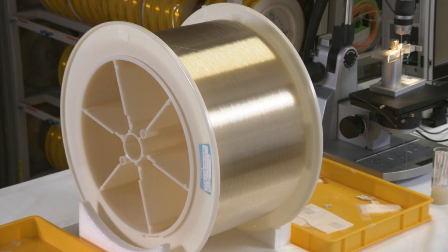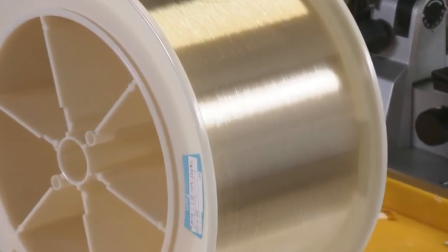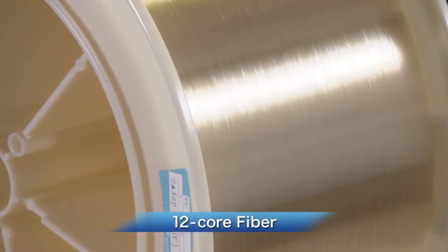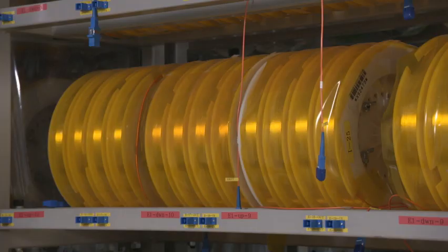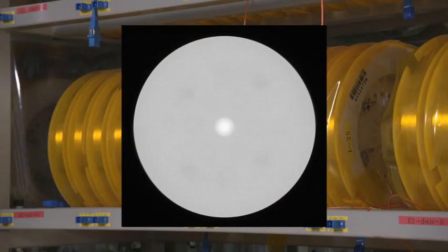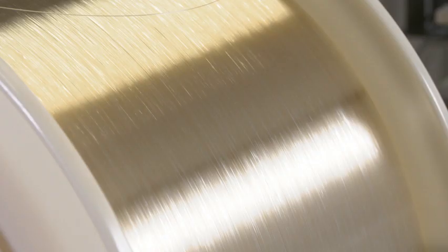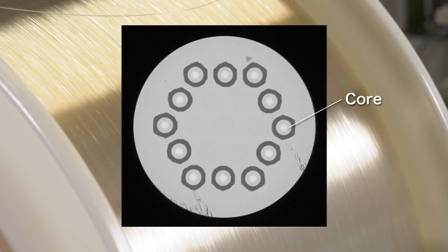The first new technology is 12-core fiber that improves the structure of optical fiber. Ordinary optical fiber has only one core as a path for optical signals. This new optical fiber has 12 cores through which optical signals can be simultaneously transmitted.